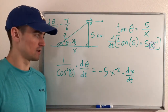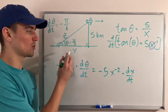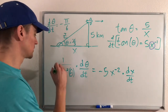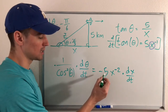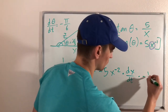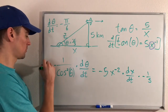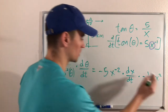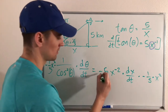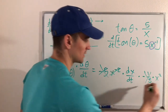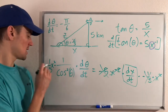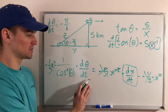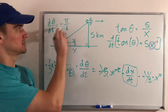Now step four: solve for the desired rate of change, dx/dt. Multiply both sides by negative one-fifth to cancel the negative 5, and by x squared to cancel the x to the negative 2. That leaves dx/dt equals negative one-fifth times x squared times (1 over cosine squared theta) times d theta/dt. We already know d theta/dt is negative pi over six, and theta is pi over three.